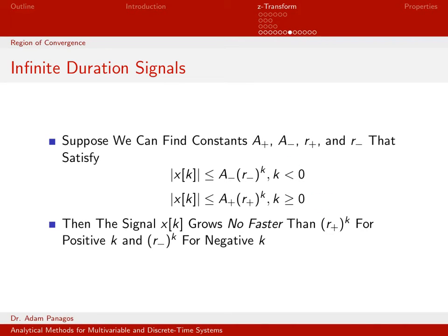The same discussion applies for positive time. A plus and R plus are just numbers chosen so that the magnitude of X of K is always less than A plus times R plus to the K. This means our discrete time signal X of K grows no faster than R plus to the K for all positive time.